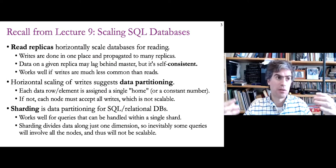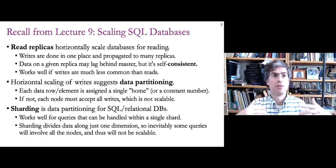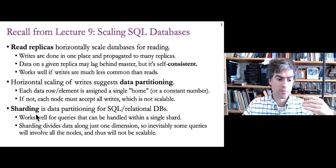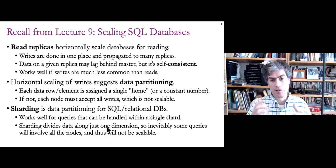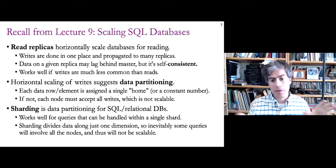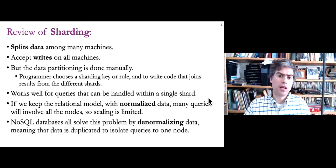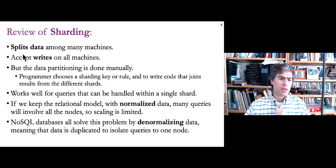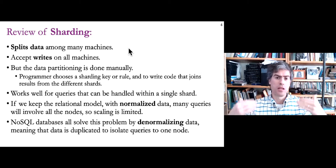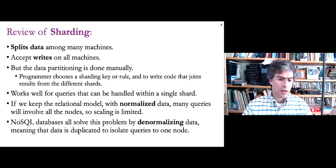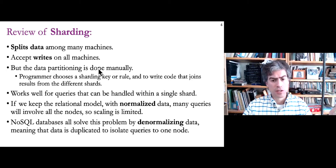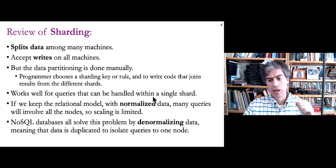Each shard has the capability to store rows for all the tables, but you divide the rows using some sharding rule. For example, you might have all data for users in a particular geographic region on one server and a different region on another. They're functionally equivalent but store a subset of the data. This lets us accept writes on more than one machine concurrently. The downside is that partitioning had to be done manually with a sharding rule.